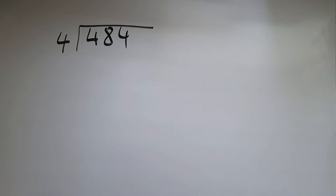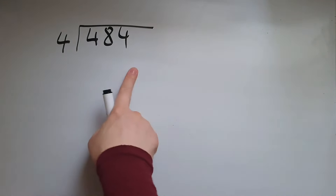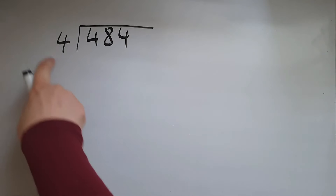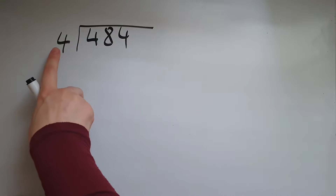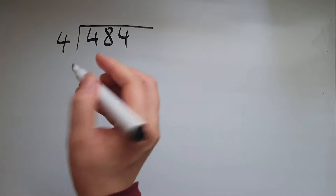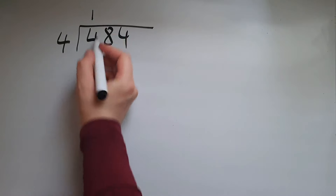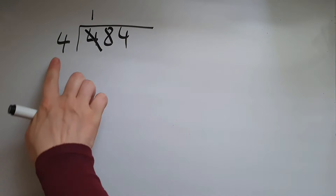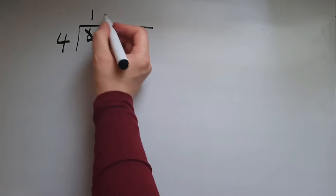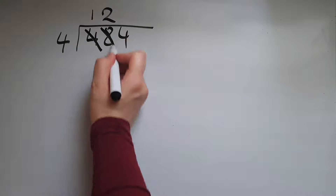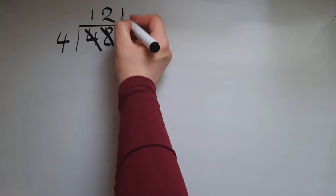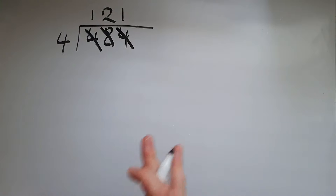We're using the bus stop method. When we divide by 4, we put the 4 in front and look at how many 4s fit into 4 — that's just one with nothing remaining. How many 4s fit into 8? That would be two, nothing remaining. How many 4s into 4? One again, nothing remaining.